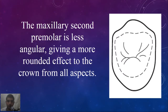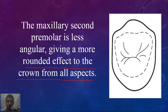We will start from an occlusal aspect. We said before that in the Maxillary First Premolar, from an occlusal aspect, it has a hexagonal figure. While in the Maxillary Second Premolar, it is less angular, giving a more rounded effect to the crown from all aspects.